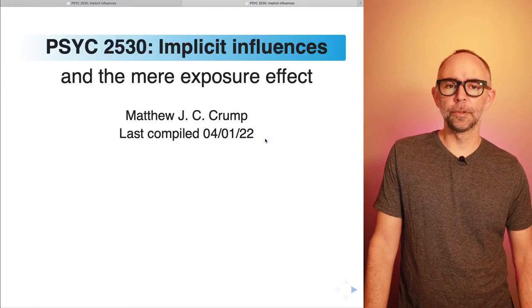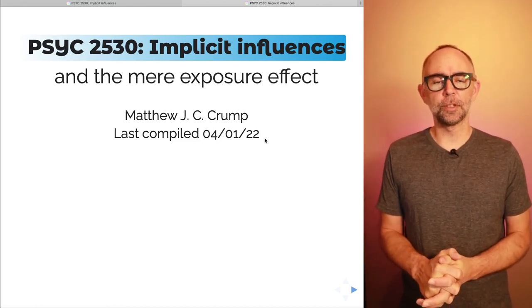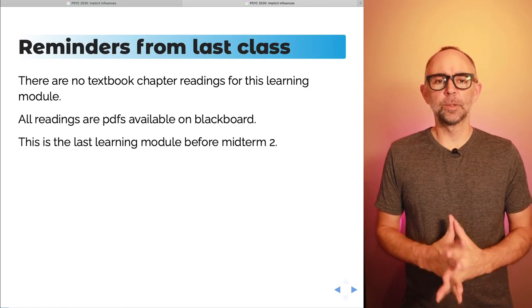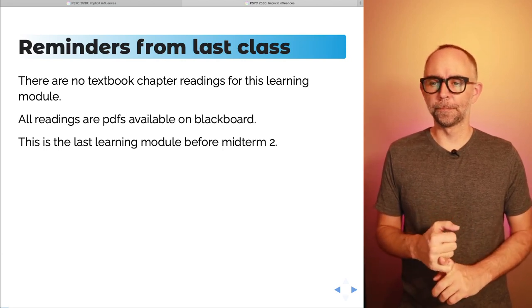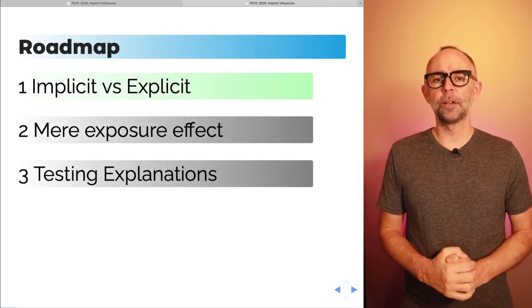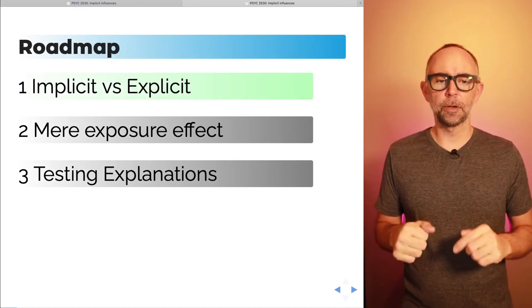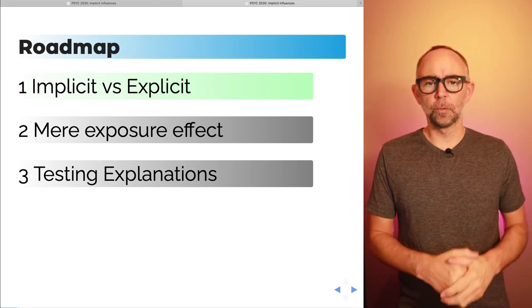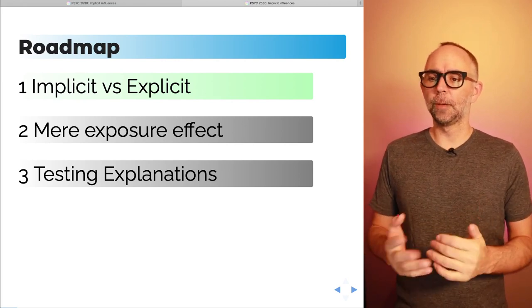Let's jump into the slides. We're covering 'Implicit Influences and the Mere Exposure Effect.' I'll just reiterate: any readings for this module will be a PDF available on Blackboard, and this is the last learning module before our second midterm. We've got three things to cover in this mini lecture, split into two parts. This part covers implicit versus explicit cognition and the Mere Exposure Effect. The second part will discuss ways people have tested explanations of the Mere Exposure Effect.